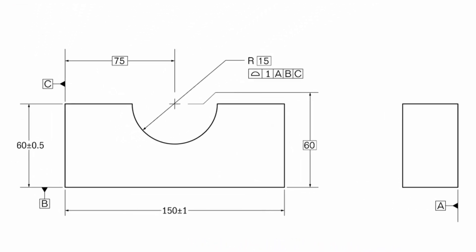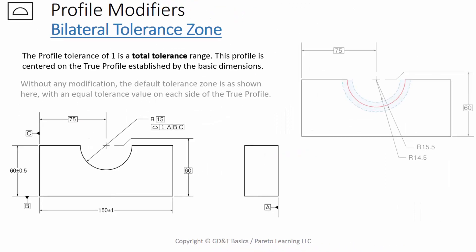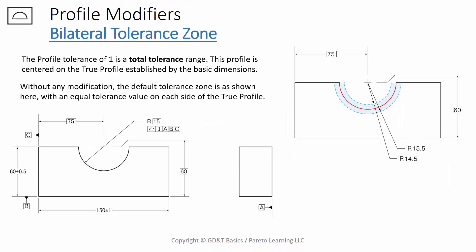The profile tolerance of 1 is a total tolerance range in this example. The profile would be centered on the true profile that's established by the basic dimensions. Without any modification, the default tolerance zone is shown here, with an equal tolerance value on each side of the true profile. It's a total tolerance of 1, so you'd have 0.5 on one side and 0.5 on the other.